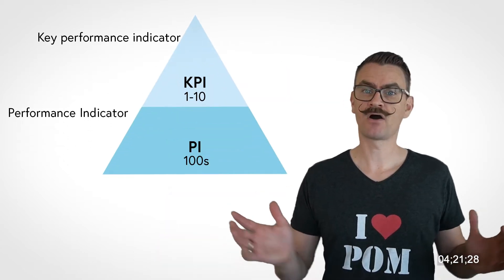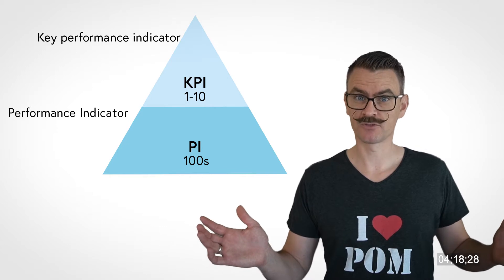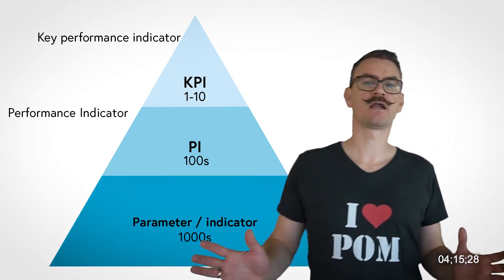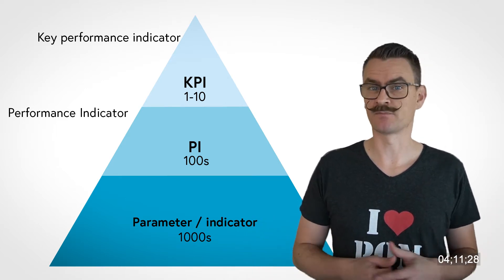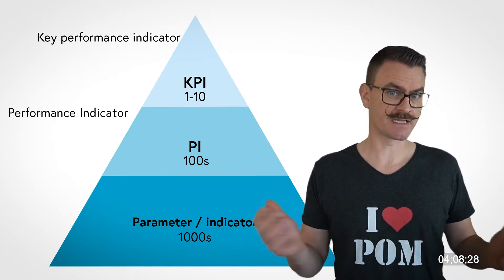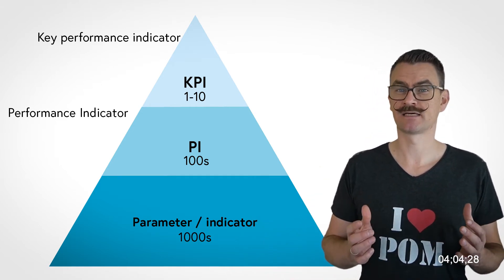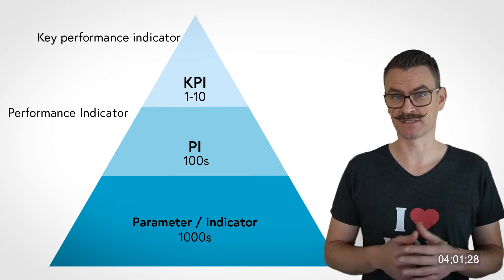OEE is particularly important in make-to-stock environments or when machines are bottlenecks or very expensive. A company can have hundreds of such performance indicators, but not all of them should be key. There are all kinds of parameters that can be measured directly — for example, timestamps, counted units, pressure, energy consumption, cost, and so on. Indicators are typically calculated from several of these measured parameters.